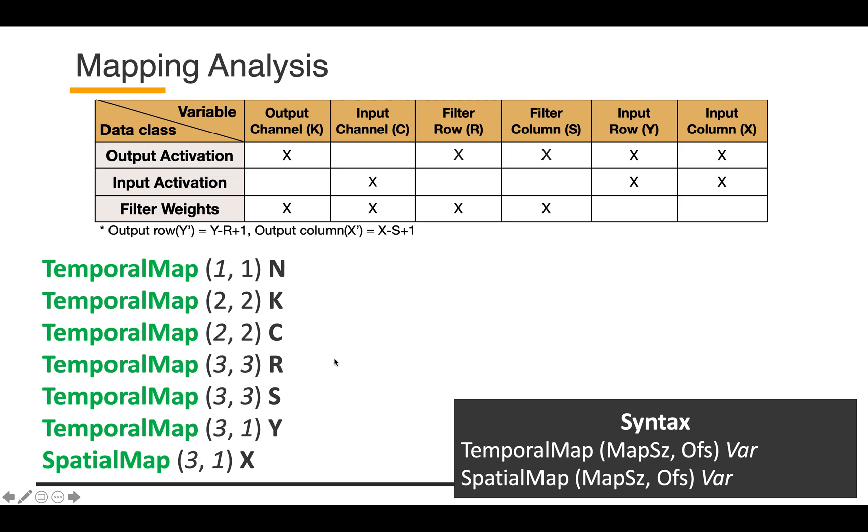Keeping those coupling relationships in mind, let's take a look at this example mapping. Now we want to know how many weight pixels or weight data points do we have on each PE based on this mapping. What you need to do is just investigate the mapping sizes for the coupled dimensions for filter weight. In this table, as you can see, the filter weight is coupled with K, C, R, and S dimensions. So what we need to do is just multiply the mapping size of all of them. This is exactly the same as getting the volume of some 3D object, the cube.